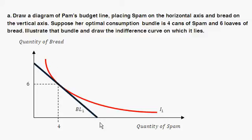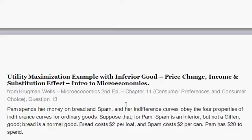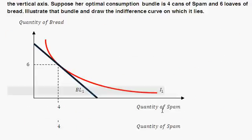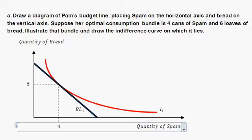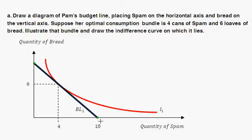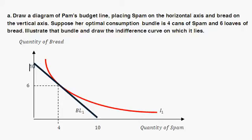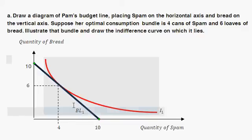We're told Pam has a total of $20. So the budget line goes up to — if Pam were to spend all of her money on spam, zero on bread, and spam costs $2 per can, then she would be able to get 10 cans of spam. Similarly, if Pam were to spend all of her money on bread — zero on spam — she would be able to buy 10 loaves of bread. So the budget line is this line right here, reflecting all possible combinations. Inside the triangle are bundles of bread and spam that Pam can afford.